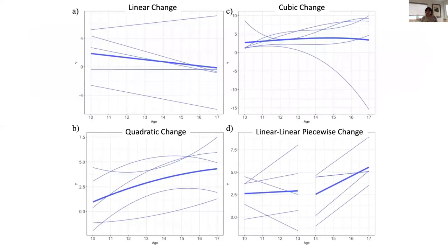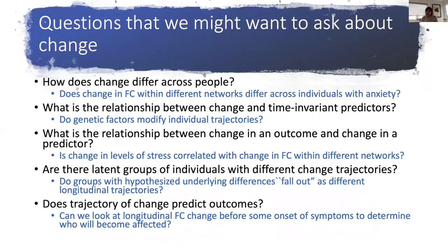This is an example of some forms of change: linear, cubic, quadratic, and linear piecewise change where you have two segments of development each modeled with a different type of curve. Once you have decided upon change and have enough time points to measure it, you can think about how to ask your questions. Focusing on functional connectivity, one thing to consider is how does change differ across people? Does change in functional connectivity within different networks differ across individuals with anxiety? You can look at how slopes and trajectories differ across groups.